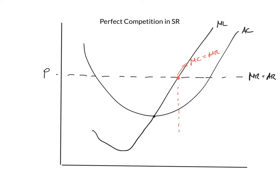And that tells me the output that the firm will make. So the next question is, how much supernormal profit is the firm making?